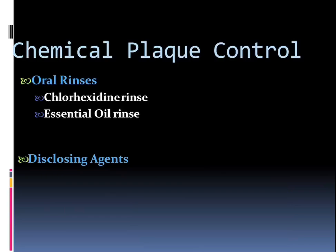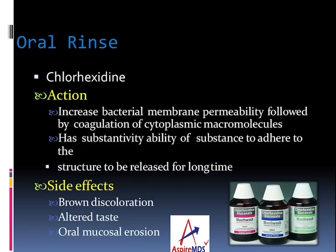Now let's talk about chemical plaque control. There are various oral rinses mainly consisting of chlorhexidine or essential oil rinses, and various disclosing agents as well. Talking about chlorhexidine: its action is increased bacterial membrane permeability, followed by coagulation of cytoplasmic macromolecules. The substantivity is an ability of this substance to adhere to a structure and be released over a long time — this is the main mechanism of action of chlorhexidine.